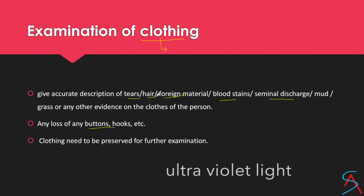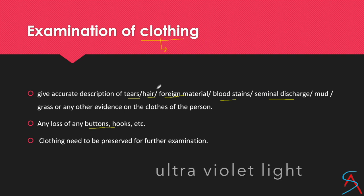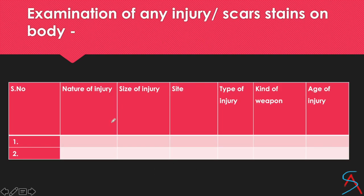You can look for seminal stains on clothing and also on the body using ultraviolet light. Then examine the body for injuries or scars — look for scratch marks or bite marks. Write down the details of any injury and click photographs for evidence. Also look for petechiae on the face or conjunctiva, as these may indicate partial asphyxia.